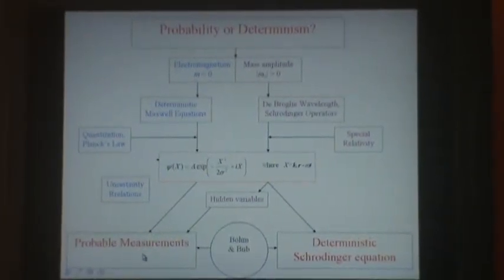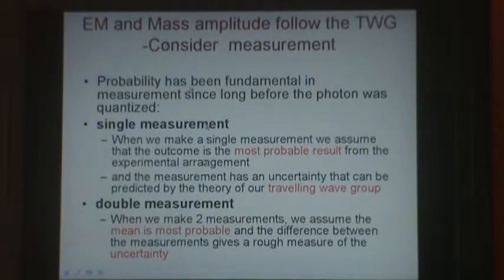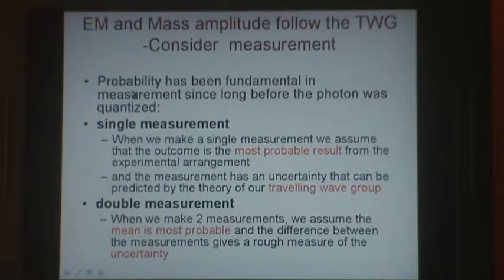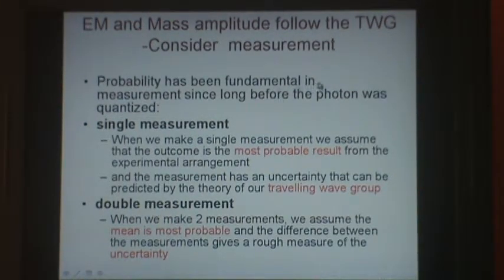But let's think about measurement for a moment. We're going to think in three steps. First, notice that probability has been fundamental in measurement since long before the photon was quantized. We'll illustrate this first in a single measurement. When we make a single measurement, we assume something. We assume that the outcome is the most probable result from the experimental arrangement, and we assume also that the measurement has an uncertainty that can, in principle, be predicted by the theory of our travelling wave group.